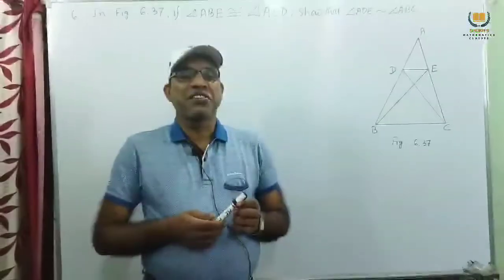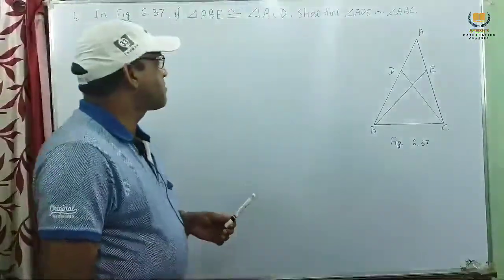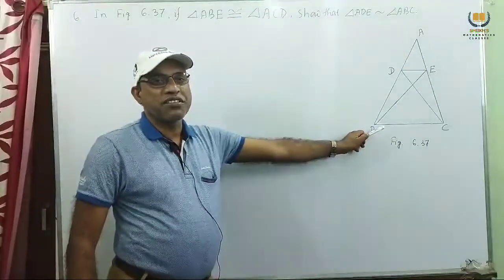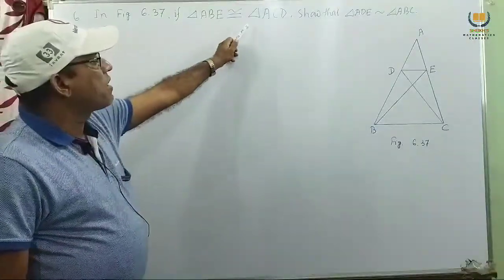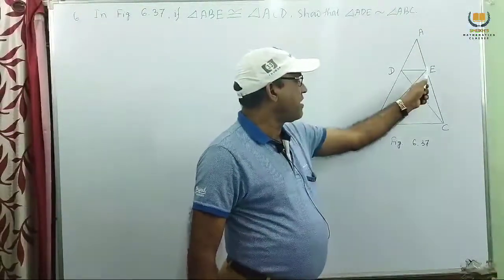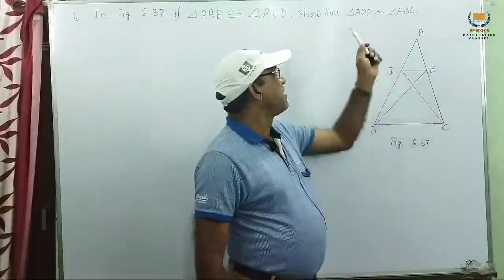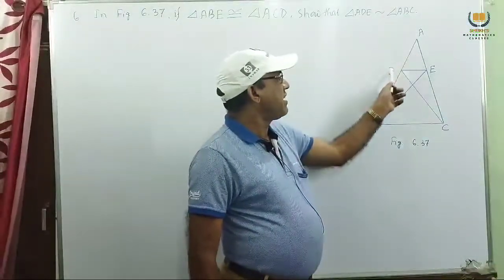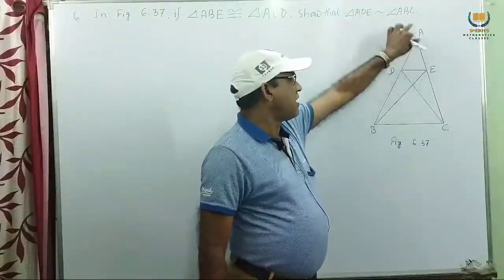Now we consider another interesting problem — problem number 6. In figure 6.37, triangle ABE is congruent to triangle ACD, such that we have to show triangle ADE is similar to triangle ABC. This small triangle and this whole triangle are similar.